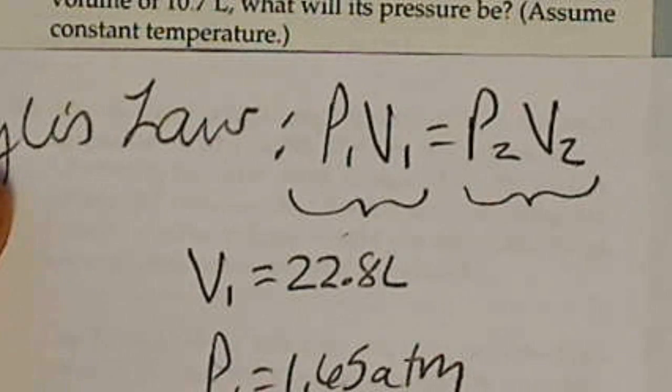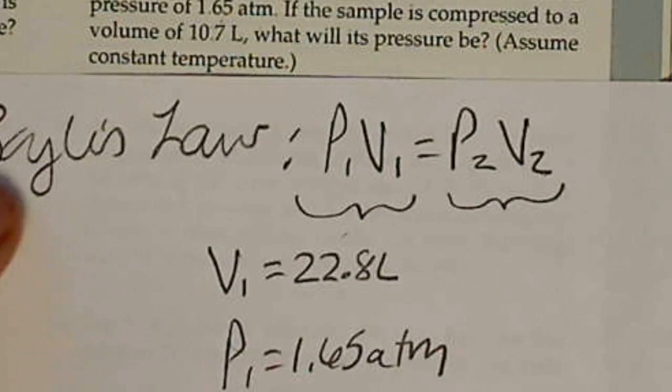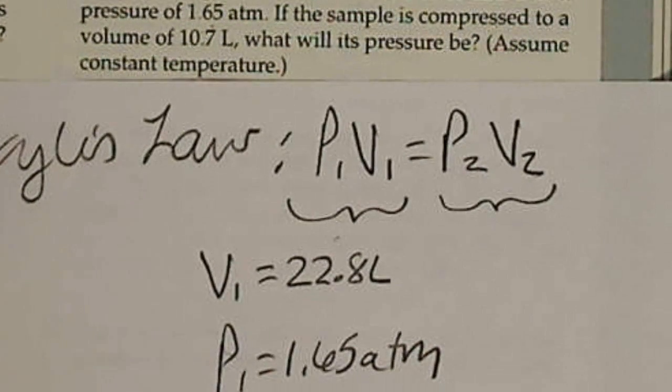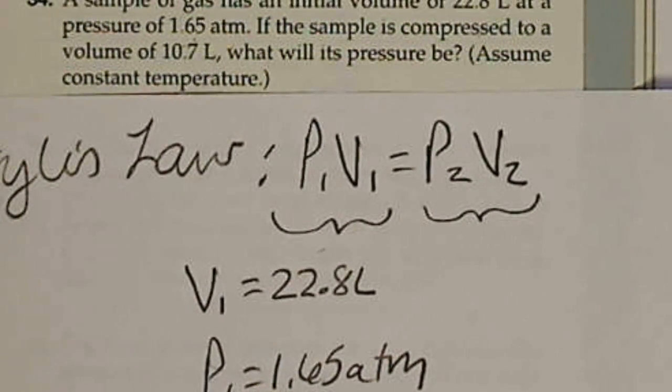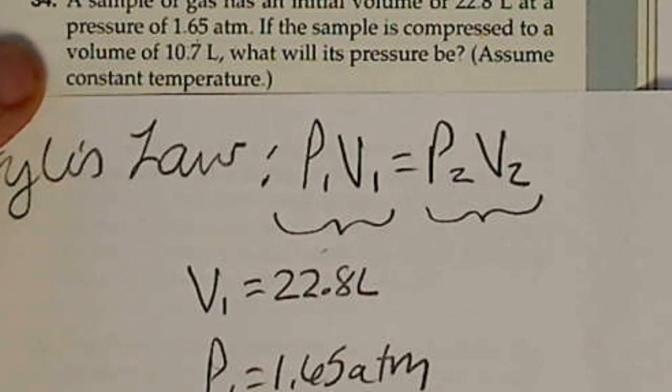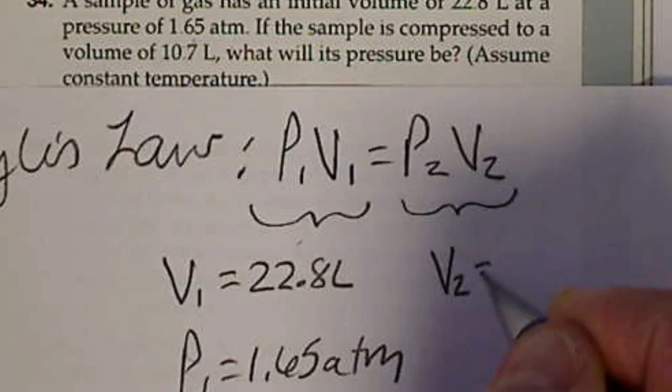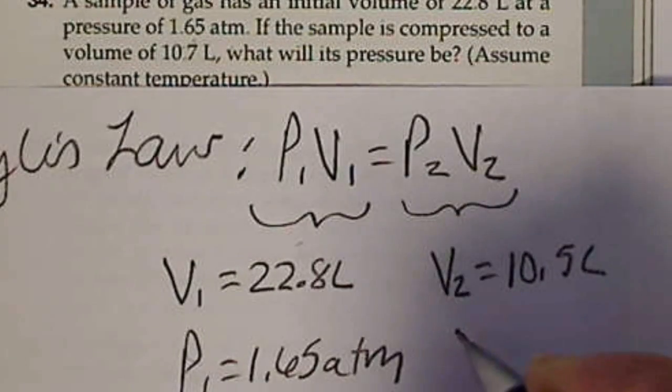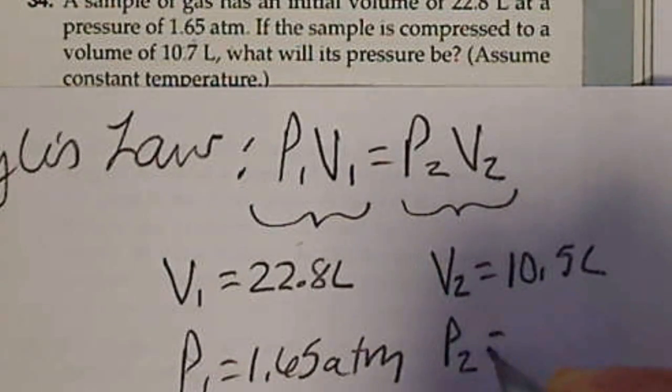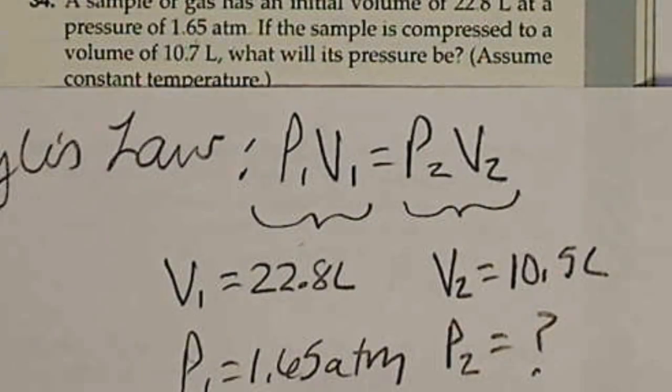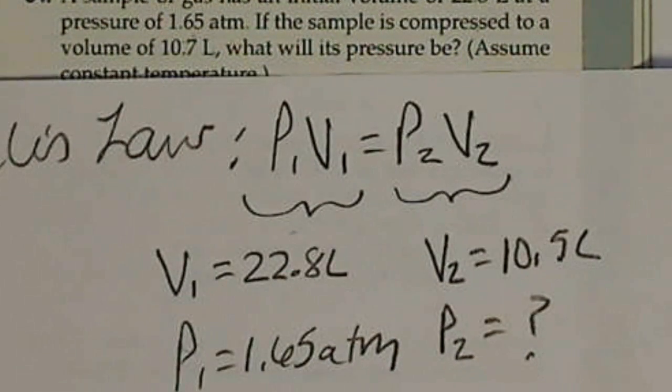And the problem gives us a new volume. It says that the volume is compressed so that it's now 10.5 liters. So that's what V2 would equal. And we're asked to solve for the new pressure. So P2 is what we're looking for.